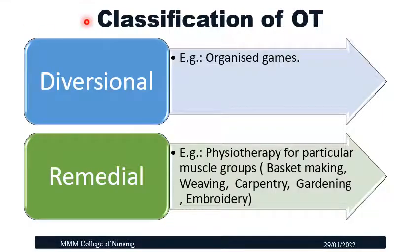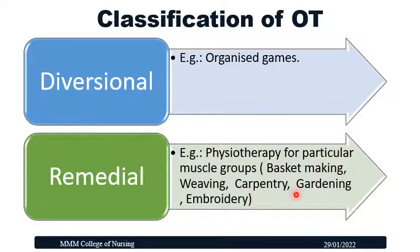Occupational therapy is classified as diversional and remedial. Under diversional, it includes organized games. Under remedial, it aims to improve muscle groups through activities such as basket making, weaving, carpentry, gardening, and embroidery.